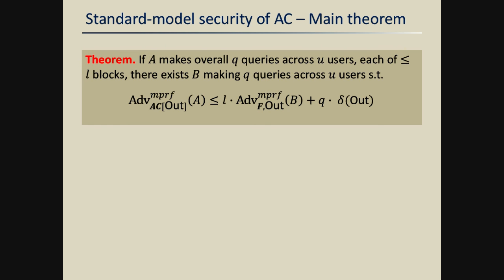Given this notion, we can state our first main standard model result: a reduction showing that if the underlying compression function is a multi-user secure PRF under out-leakage, then the augmented cascade construction is also a good pseudorandom function in the multi-user setting. We proved this quantitatively. The bound incurs a concrete factor-L loss, where L is a bound on the number of blocks in each query made by the distinguisher.